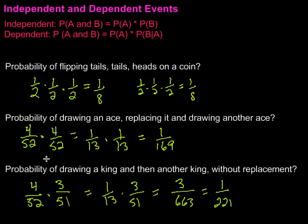So, notice the difference. If it's independent, where we're replacing the card, the chances are 1 out of 169. If it's dependent, meaning we're not replacing the card, there's a different probability from the first time to the second. Notice how now it's only 1 out of 221. So, there is a very distinct difference there.